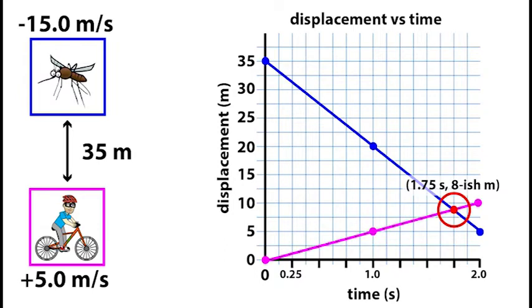I'd like to be able to know exactly how many meters from my starting position I hit the mosquito, so there's another method we could use if we're looking for a little bit more accuracy.